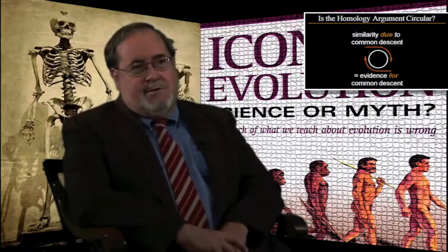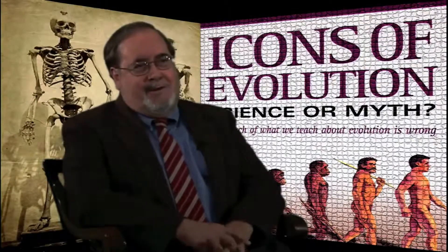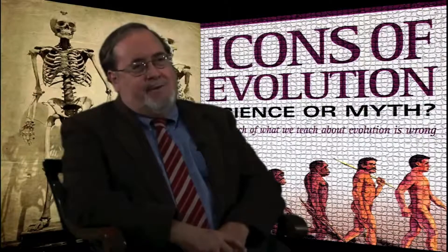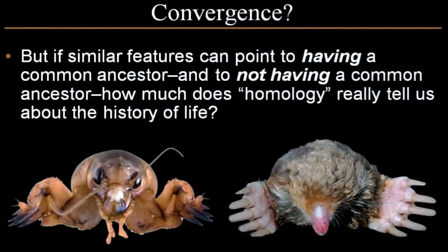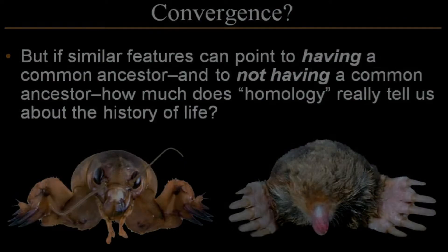So Dawkins' solution is to use another word: homeomorphic. We don't talk about homology now, we talk about homeomorphism. But it's a nice try — it doesn't really solve the problem. The problem is still: how do you use similarities and differences to show common ancestry as opposed to common design?